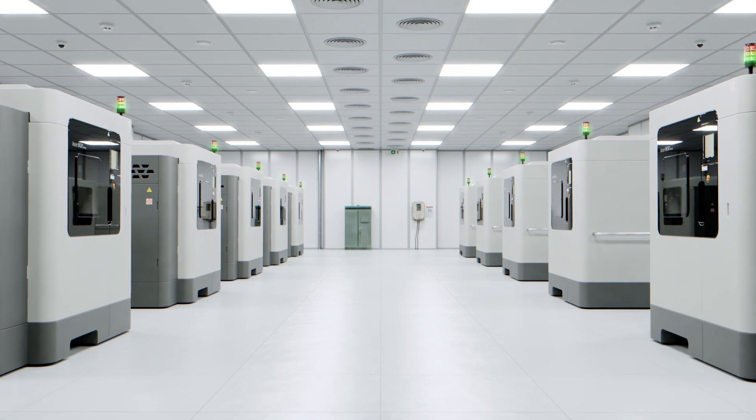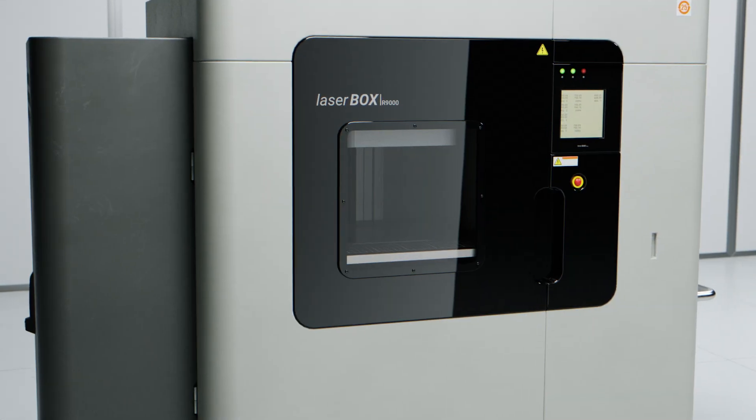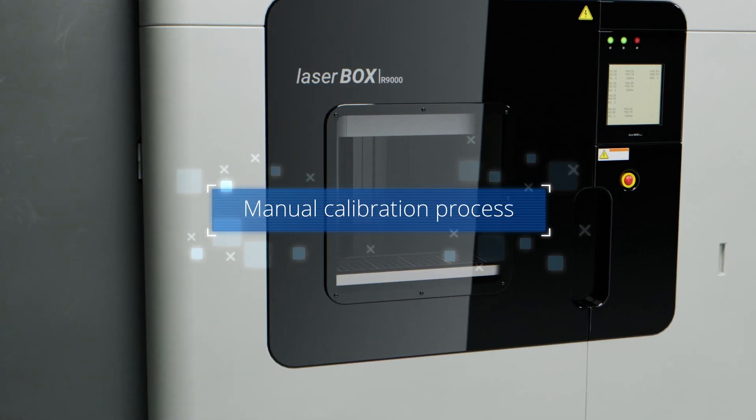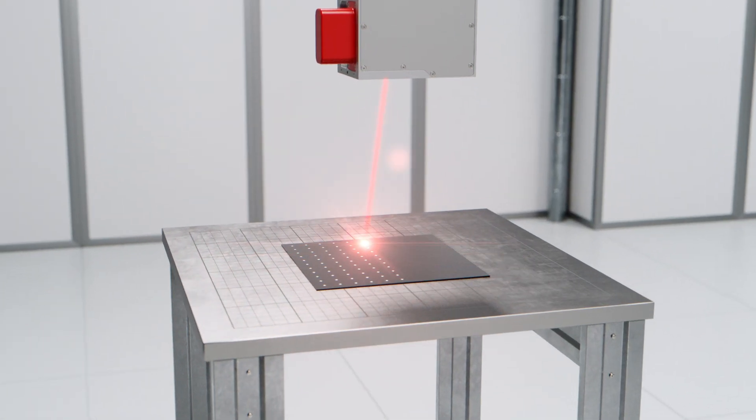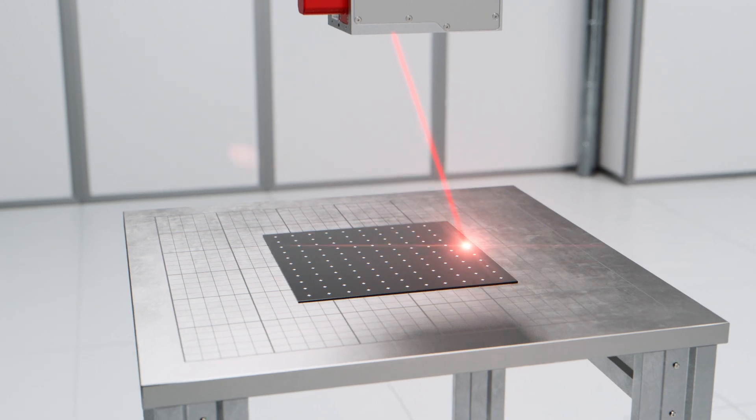The manual calibration of the scan field is a lengthy, time-consuming process. A laser typically marks a grid of up to 11 by 11 cross points on a calibration plate.